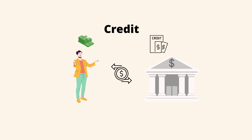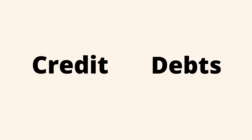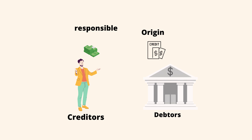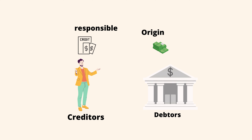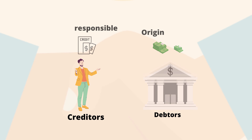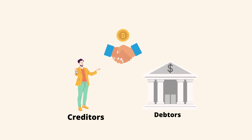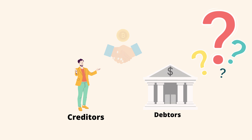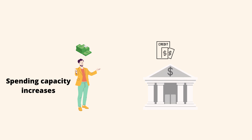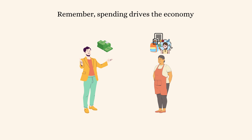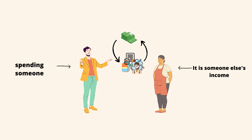Once credit is established, it immediately turns into debt. Debt is an asset for the lender and a liability for the debtor. When the debtor repays the loan plus interest, the assets and liabilities disappear and the deal is closed. So why is credit considered very important? Because when the debtor gets credit, spending power increases — and spending drives the economy. Because someone's spending is income for someone else: every dollar you spend is earned by someone, and every dollar you earn is spent by someone.